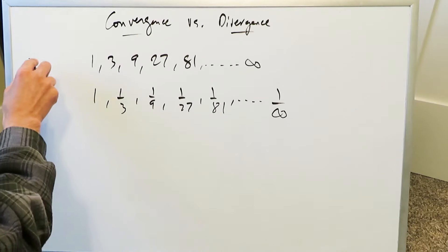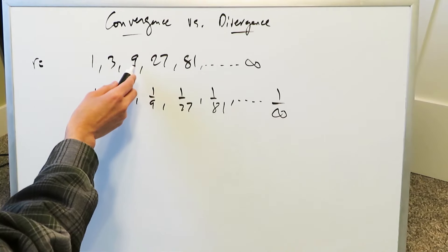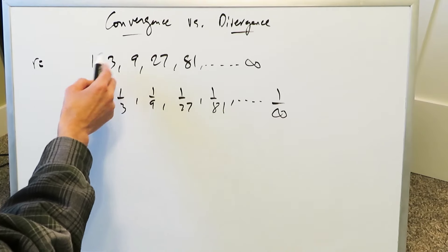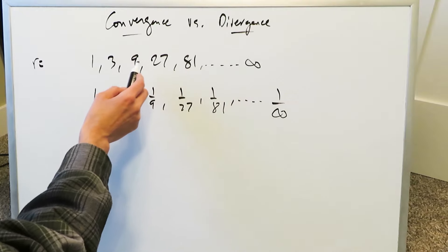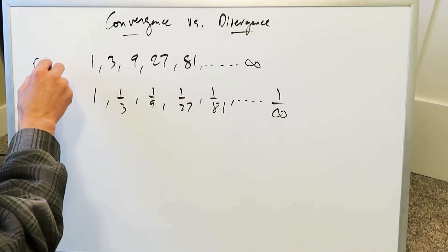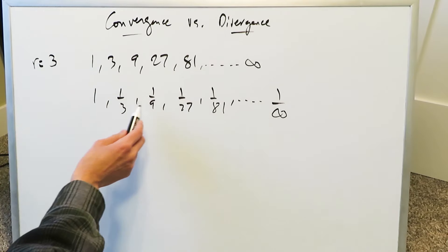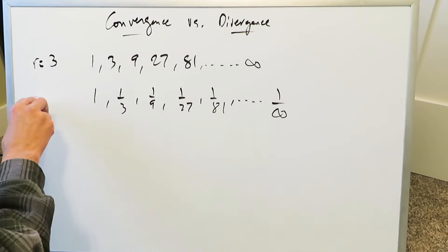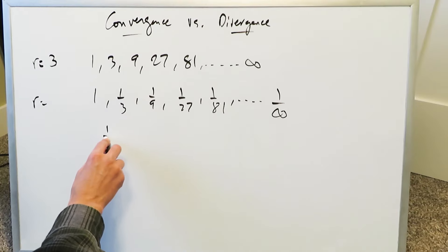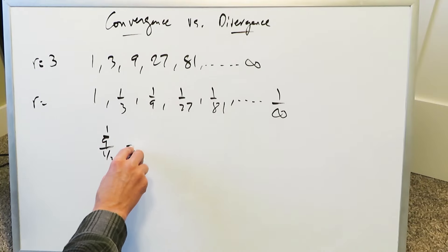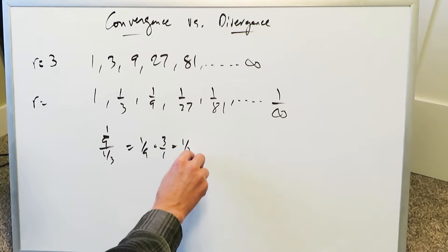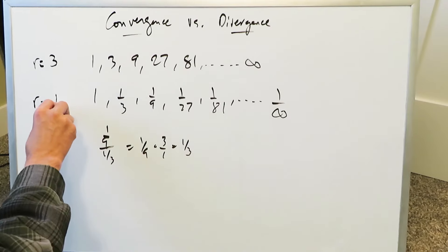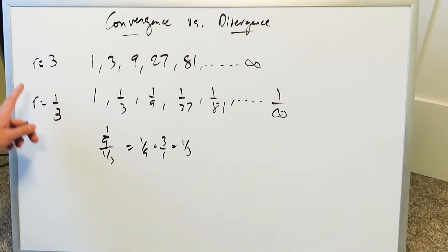What's the common ratio? Take a number and divide it by the one before it: 9 divided by 3, 27 divided by 9, 81 divided by 27 — here the common ratio is 3. Do the same over here: 1/9 divided by 1/3 gives you 1/9 times 3/1, which equals 1/3. Here your common ratio is a fraction, here your common ratio is a whole number.